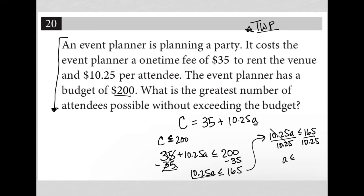And then let's go to my calculator. You'll have an integrated calculator for the digital version of this test. And 165 divided by 10.25 is 16.098, basically.